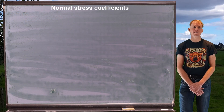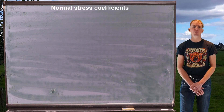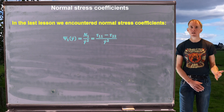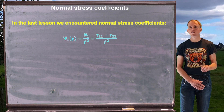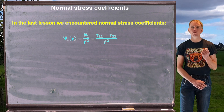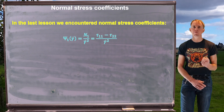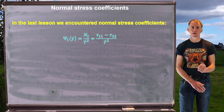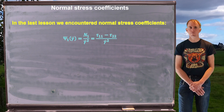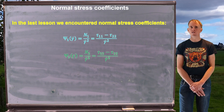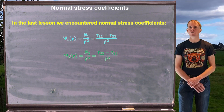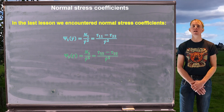We can define two normal stress differences, which we phrase as normal stress coefficients Ψ (capital psi). Ψ₁ is the first normal stress difference N1 divided by the shear rate magnitude squared, γ̇², so Ψ₁ = (τ₁₁ − τ₂₂) / γ̇². The second normal stress coefficient Ψ₂ is N2 divided by γ̇², which is (τ₂₂ − τ₃₃) / γ̇².